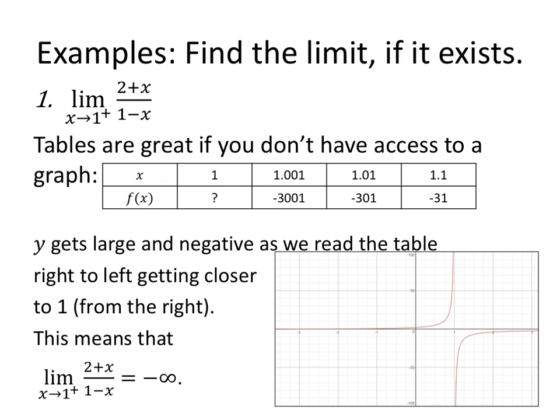Find the limit if it exists. Tables are great if you don't have access to a graph. If I'm looking at the limit as x approaches 1 from the right of (2 + x)/(1 - x), I could substitute values that get closer and closer to 1, but I'm only looking from the right. And as I put 1.1 in, I'll get a negative 31, a negative 301, a negative 3001. And when it looks like these values are blowing up, y gets large and negative as we read the table from right to left, getting closer and closer to 1 from the right. And similarly with the graph, thanks to desmos.com and its graphing utility, as x gets closer and closer to 1 from the right, my y values are going to negative infinity. Numerically, graphically, the information is the same.